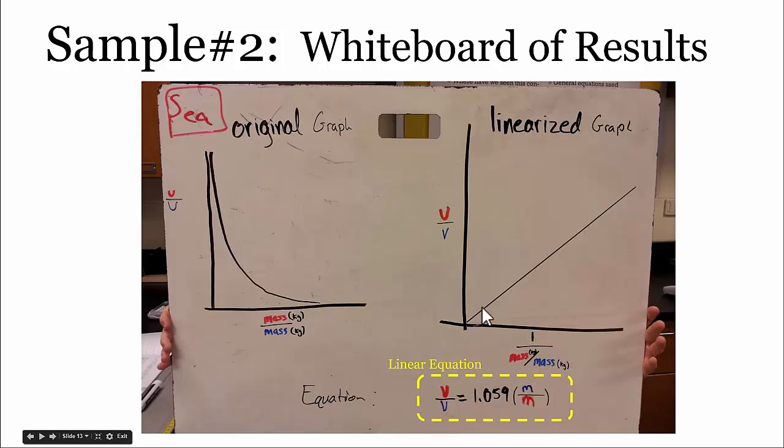Now the x variable in our linearized graph is the inverse of the mass ratio. It's actually a little bit easier to think about it if we do the simplified form of that as the blue's mass divided by the red's mass. So the question becomes, as our x variable here, the blue mass divided by the red mass, approaches zero, what would we expect the velocity ratio of the red car to the blue car to approach also?